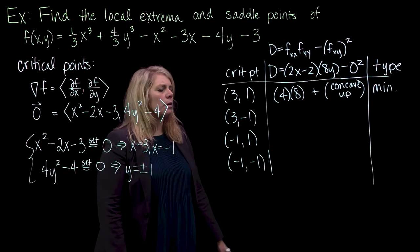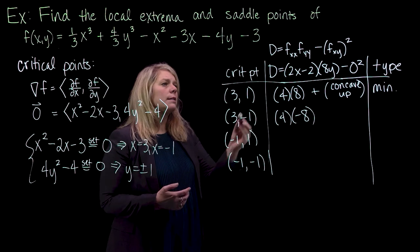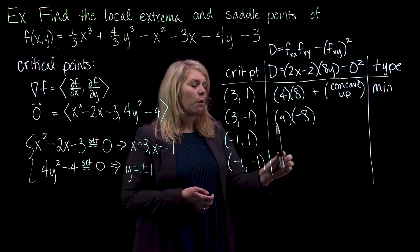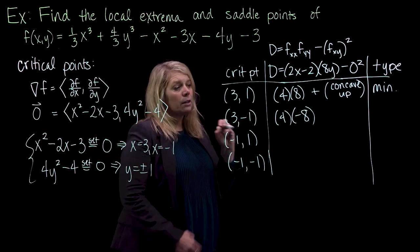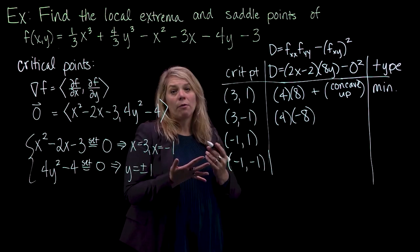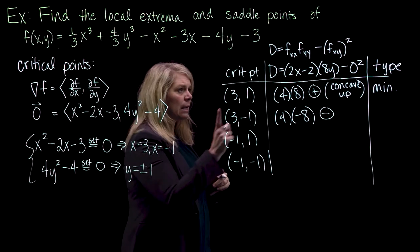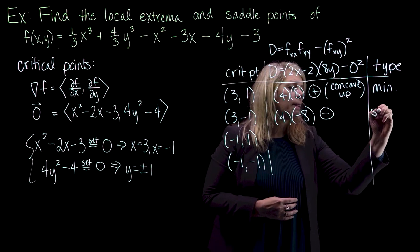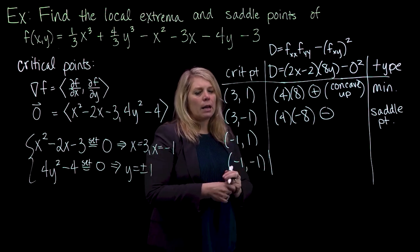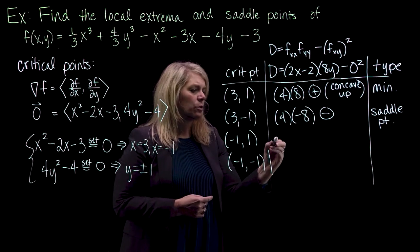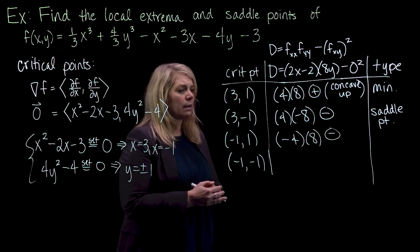Now for the point (3, -1): putting in x equals 3 gives 4 again, and putting in y equals negative 1 gives negative 8. The function is concave up in the x direction but concave down in the y direction — different concavity in different directions, which is the classic saddle point situation. Since D is negative (positive times negative), the theorem tells us we have a saddle point.